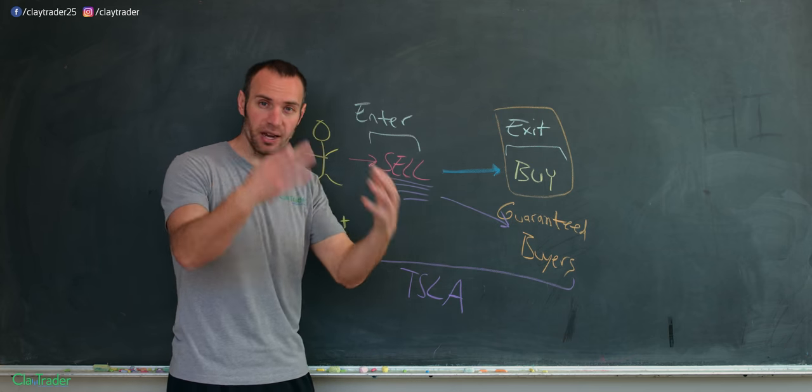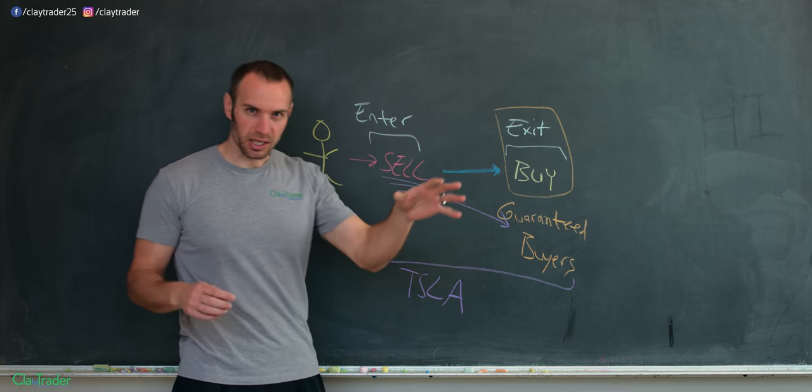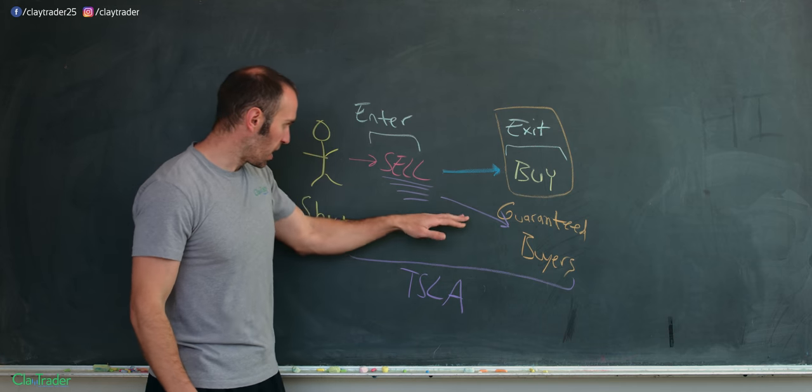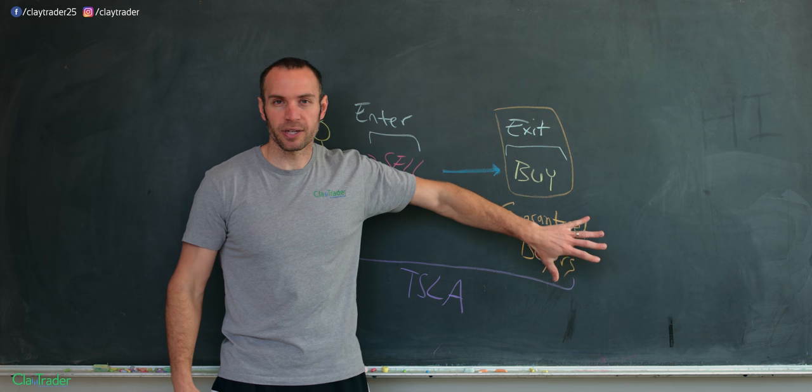The more guaranteed buyers came into the equation because, well, in order for the short to end the trade, they have to buy. So the, you know, like I said, over the years, oh, Tesla, this, Tesla, that, Tesla bearish, you know, sell, sell, sell more and more guaranteed buyers.